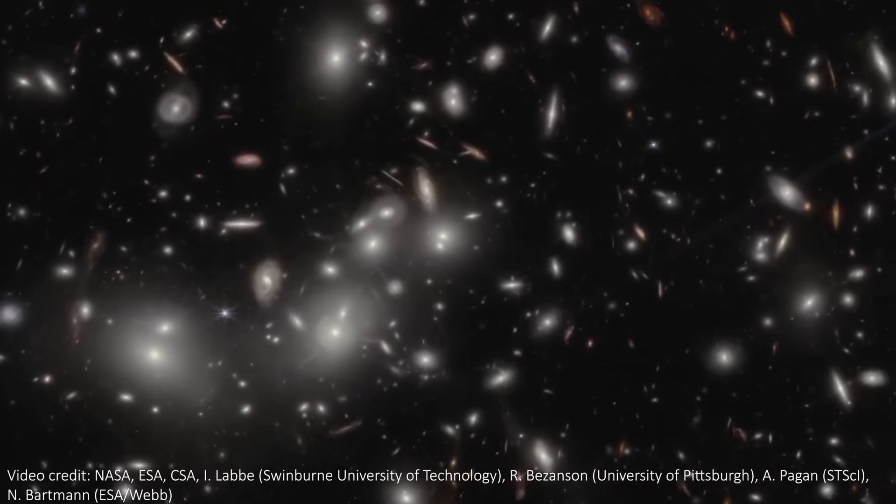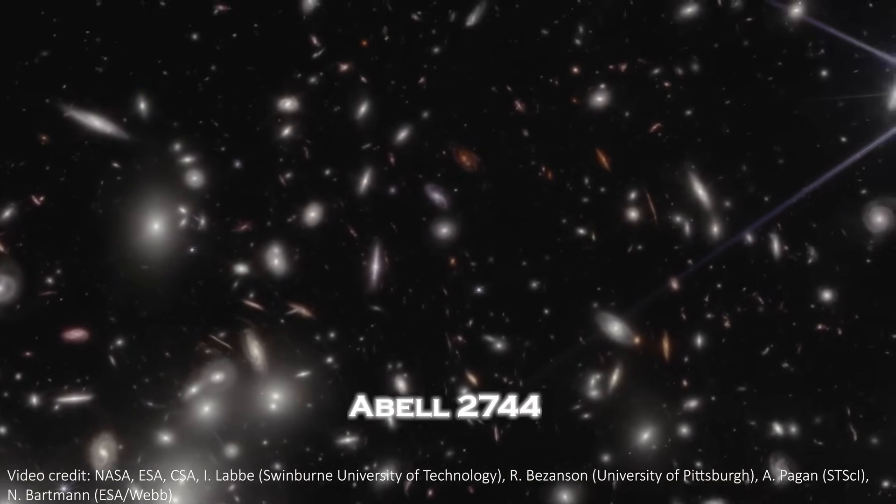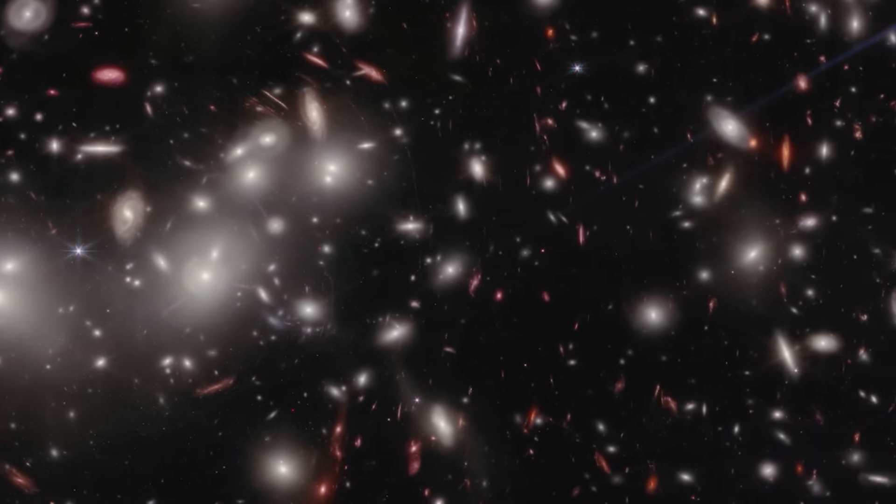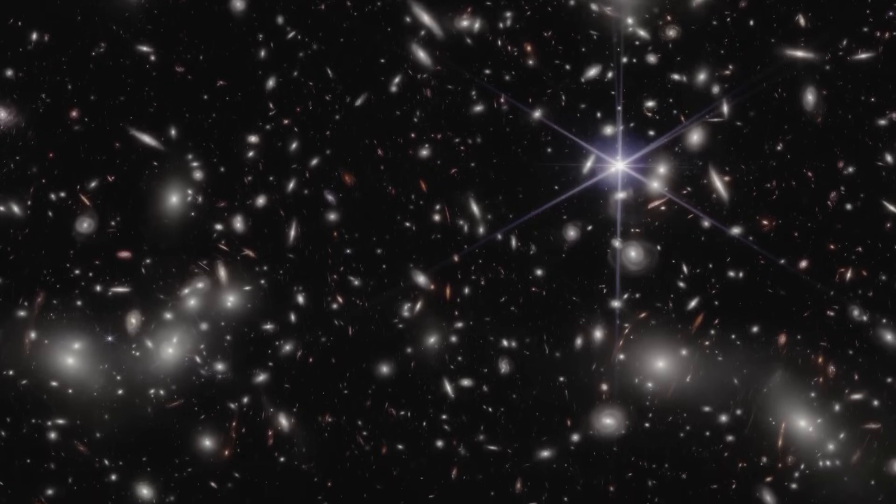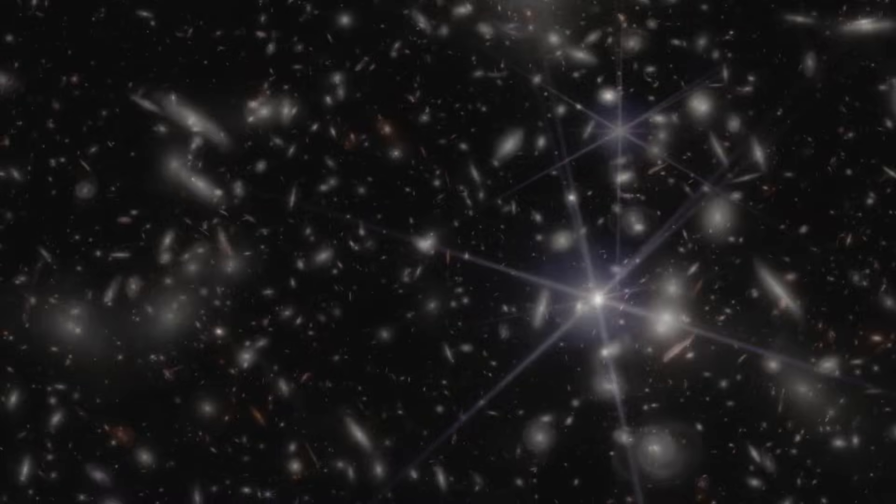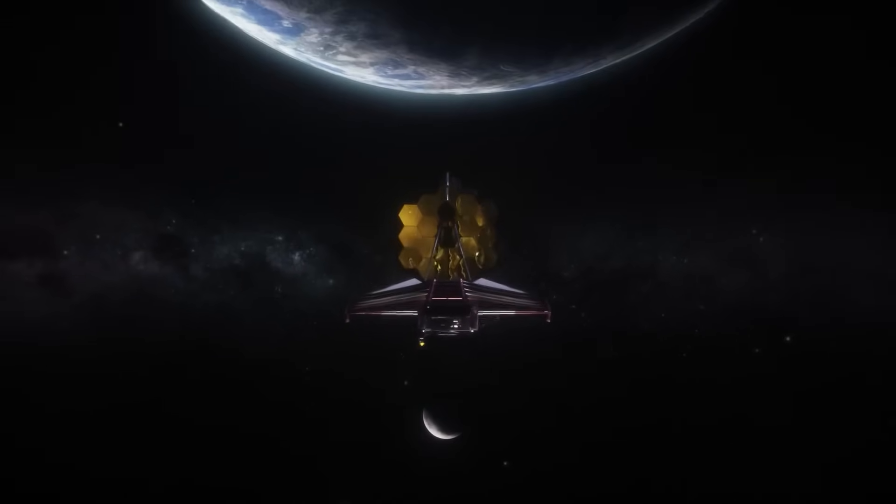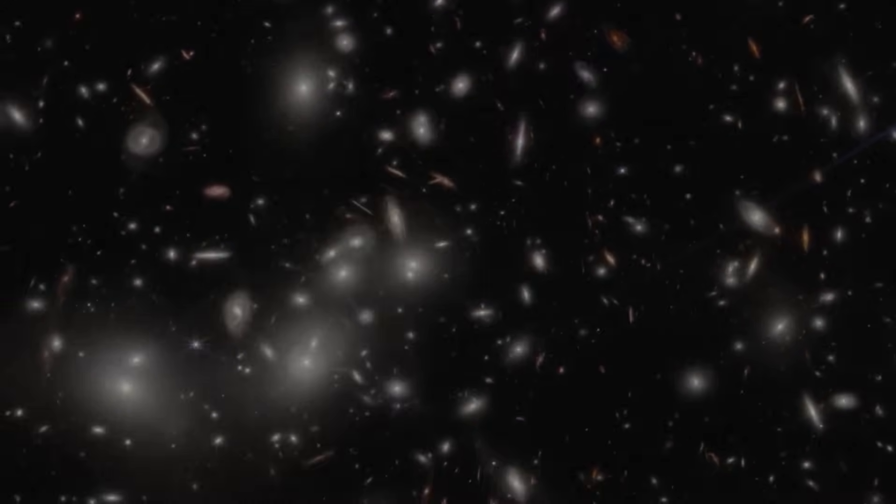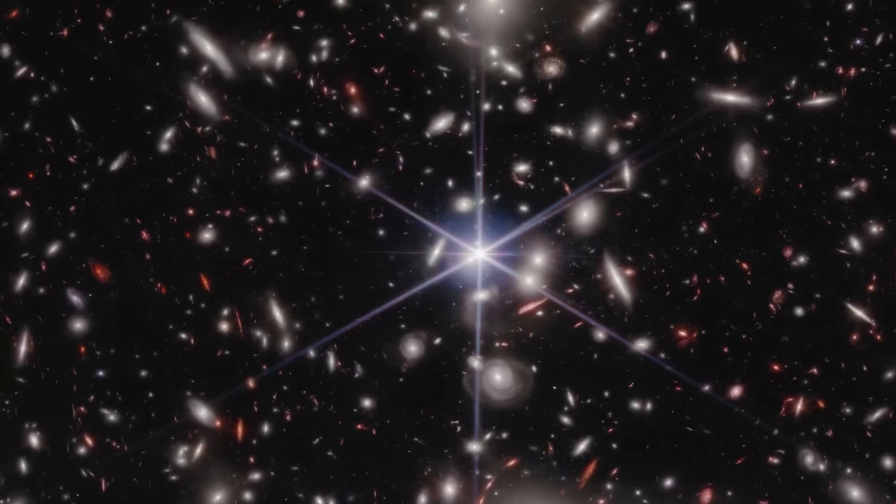Using Einstein's theory of general relativity, Webb captured a stunning panoramic view of Abell 2744, showcasing around 50,000 sources of infrared light. These include galaxies previously hidden from view, now brought to life by the telescope's unparalleled capabilities. The advanced imaging techniques used by Webb allowed scientists to peer deeper into the cluster, uncovering intricate details about the galaxy's structure and composition. These findings could revolutionize our understanding of how galaxies evolved over millions of years.